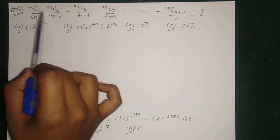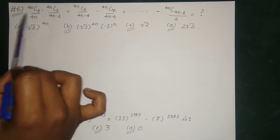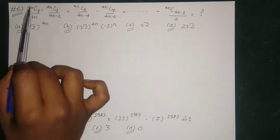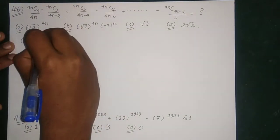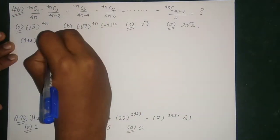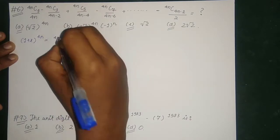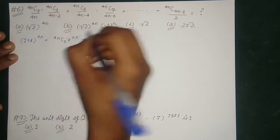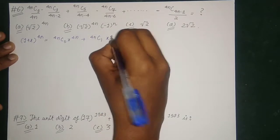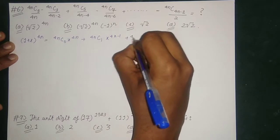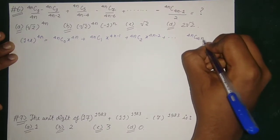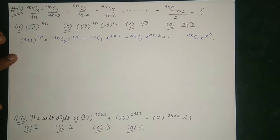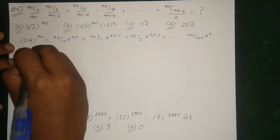From this question, first of all let's analyze. At every term the sign is changing, and the coefficient is decreasing by 2, and the top coefficient is always 4n. So first of all let's take the basic equation 1 plus x to the power 4n. As this is 4n, therefore we are taking 1 plus x to the power 4n. As we are getting a denominator in each case, this is definitely a question of integration. Therefore integrating on both sides.